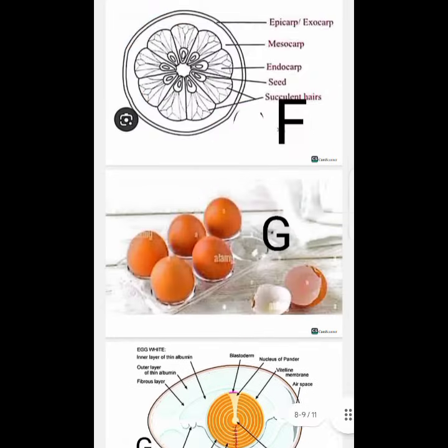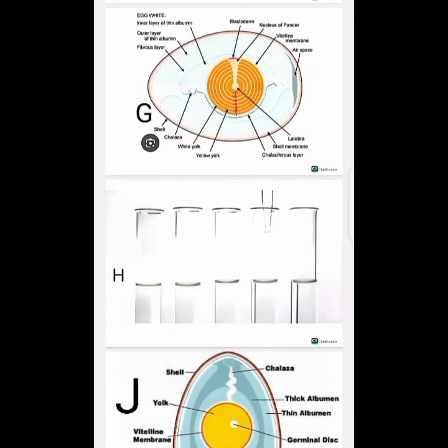Specimen J is the cooked form of specimen G — the cooked egg. It is sectioned in a longitudinal manner. The labels include the vitelline membrane, which surrounds the yolk; the chalaza; the thick albumen and the thin albumen. When you break the egg, the part closest to the shell is the thin albumen, then inside is the thick albumen, and going further in you reach the yolk. Within the yolk is the germinal disc, and there is also the inner thin albumen and the vitelline membrane surrounding the yolk.